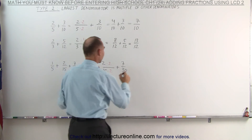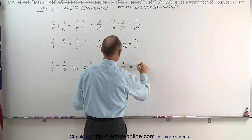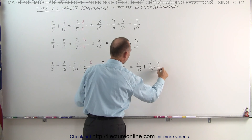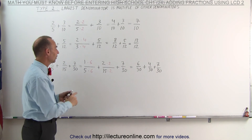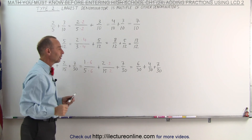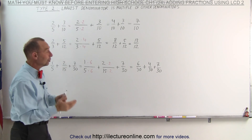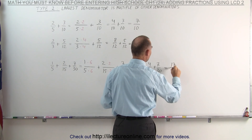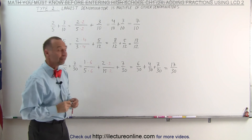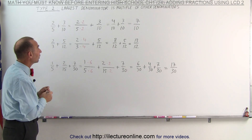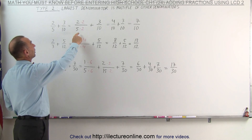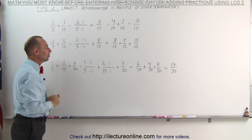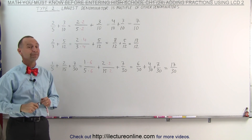Now I can write the three fractions as follows. This becomes 6 over 30, plus 4 over 30, plus 7 over 30. Notice all we have to do here is simply make all the denominators the same and multiply the numerators. Now we simply add the numerators together because all the denominators are the same, and this becomes 17 over 30. And that's how we change the denominators so they can all be the same. If the largest of the denominators is a multiple of all the other denominators, we can simply use that as the lowest common denominator. And that's how it's done.